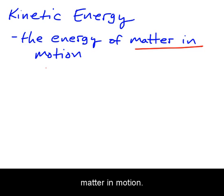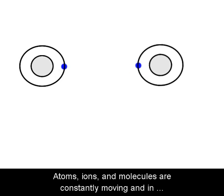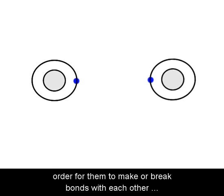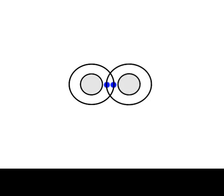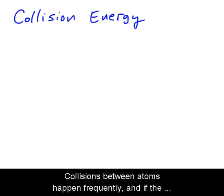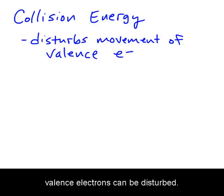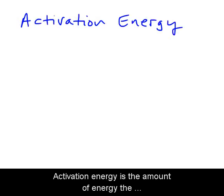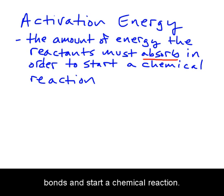As we have learned, kinetic energy is the energy of matter in motion. Atoms, ions, and molecules are constantly moving, and in order for them to make or break bonds with each other, they must first make contact. Collisions between atoms happen frequently, and if the collision energy is strong enough, the movement of the valence electrons can be disturbed. Activation energy is the amount of energy the reactants must absorb in order to make or break their bonds and start a chemical reaction.